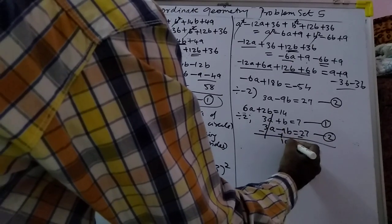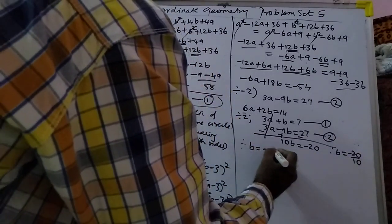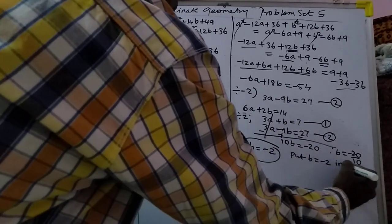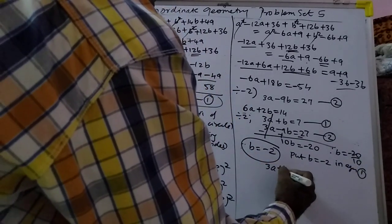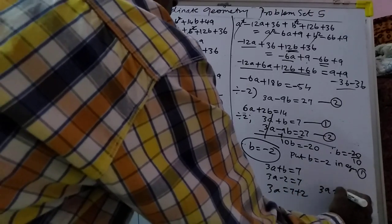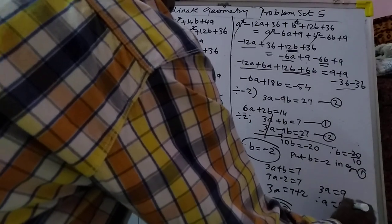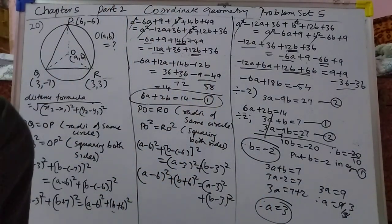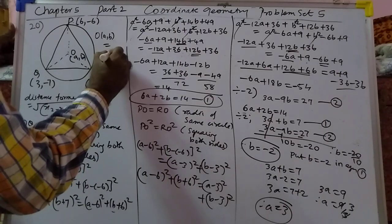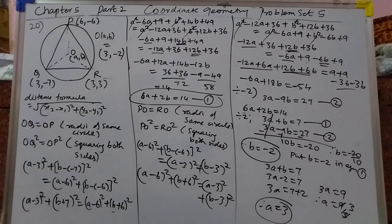Subtracting the equations, it will become 10B equals minus 20, therefore B equals minus 20 upon 10, therefore B equals minus 2. Putting B equals minus 2 in equation 1: 3A plus B equals 7, so 3A minus 2 equals 7, 3A equals 9, therefore A equals 3. So the circumcenter is 3 comma minus 2.